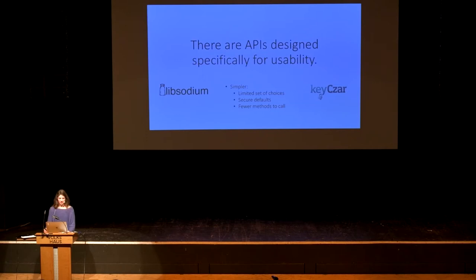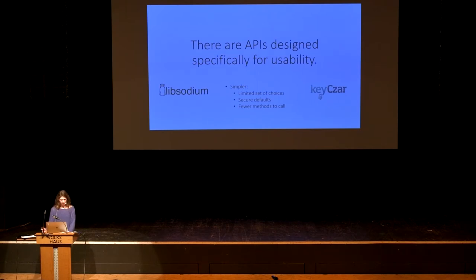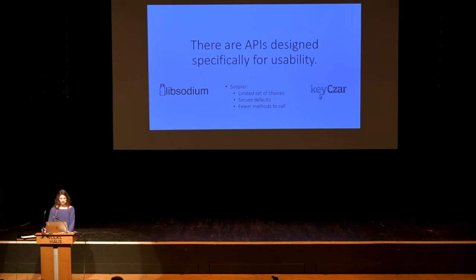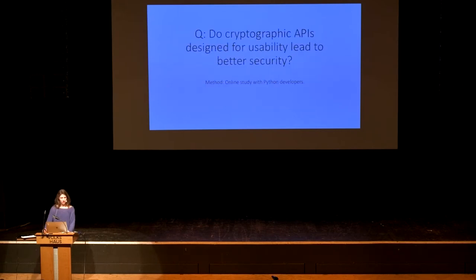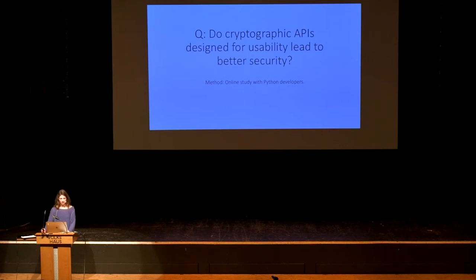Luckily, there are several APIs designed specifically for usability, and we decided to look at some of them. For the developers who created those, usability seemed to mean mostly simplifying the set of choices, picking secure defaults, and offering fewer options. Our research question was: do cryptographic APIs designed for usability actually lead to better security?